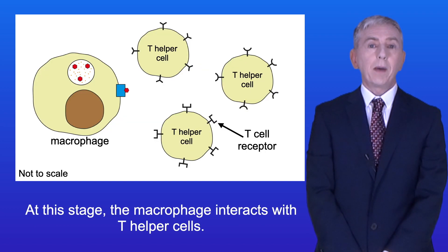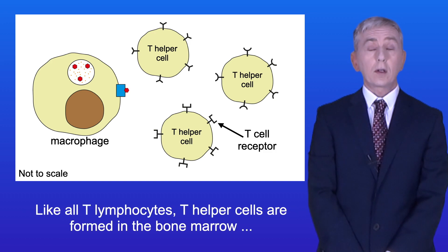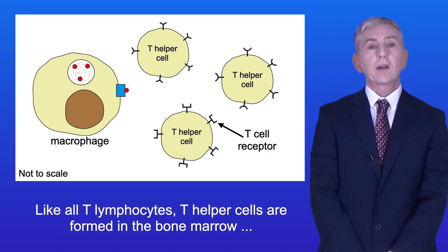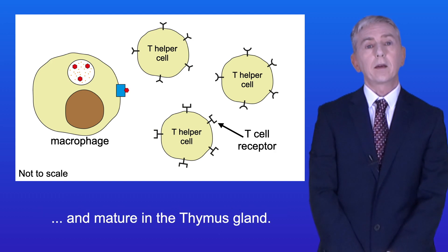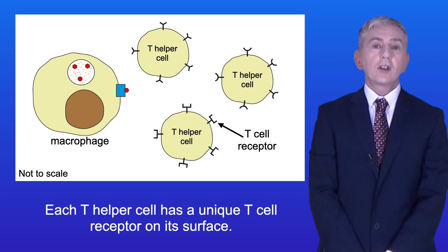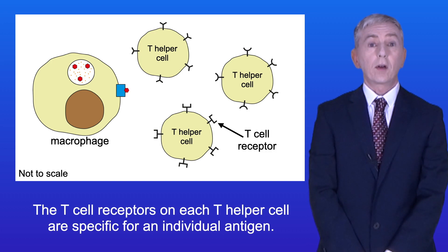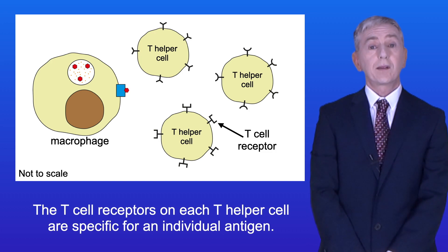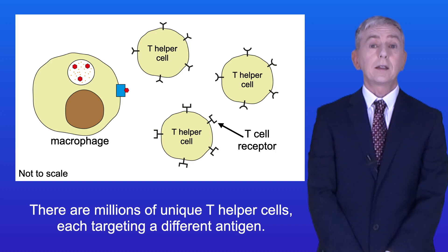At this stage the macrophage interacts with T helper cells. Like all T lymphocytes, T helper cells are formed in the bone marrow and mature in the thymus gland. Each T helper cell has a unique T cell receptor on its surface, and the T cell receptors on each T helper cell are specific for an individual antigen. There are millions of unique T helper cells, each targeting a different antigen.